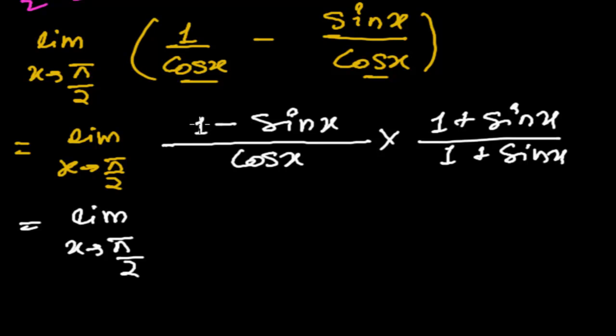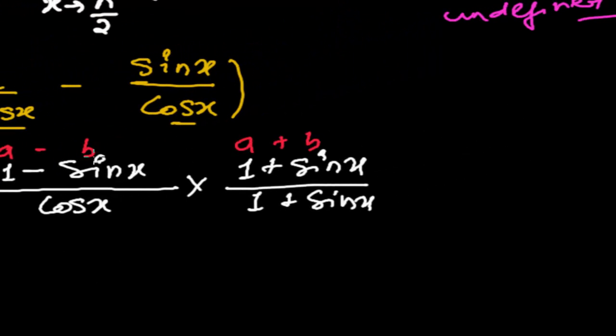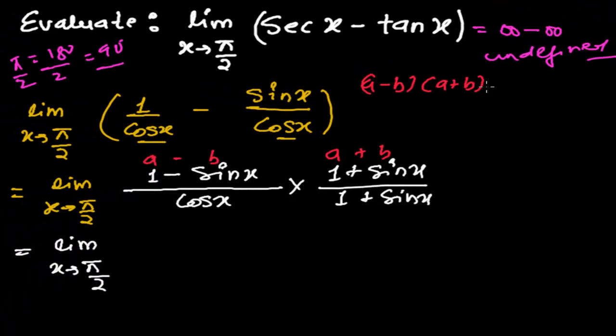It is looking like a minus b, a plus b. And you know, friend, that a minus b times a plus b is equals to a square minus b square. This algebraic identity we have to use here. So what we will get here? Now...